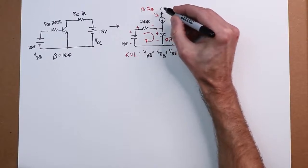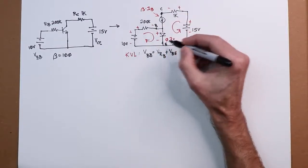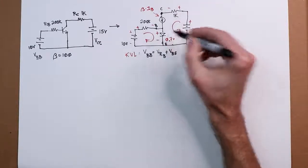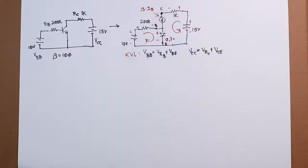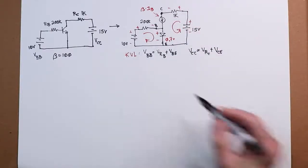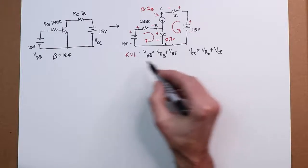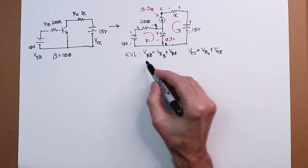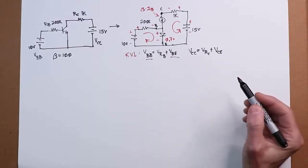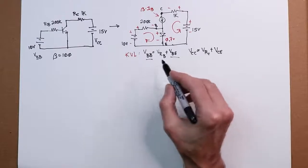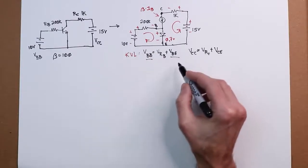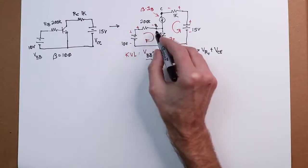Remember, this is your collector up here, your base, and your emitter. We know part of that is 0.7, but we don't know the other part. We don't know the drop across the current source. That's a reverse bias junction, so that's up in the air. This one, however, we do have some good ideas. We know VBB, that's 10 volts. We know VBE, that's 0.7. So obviously the drop across V of RB has to be VBB minus VBE.